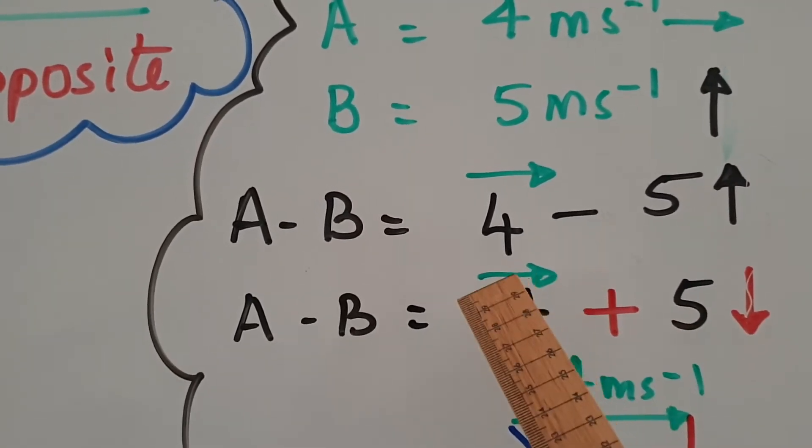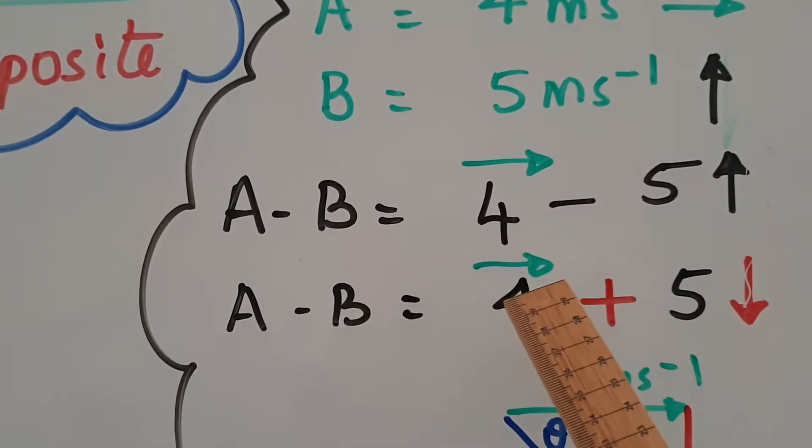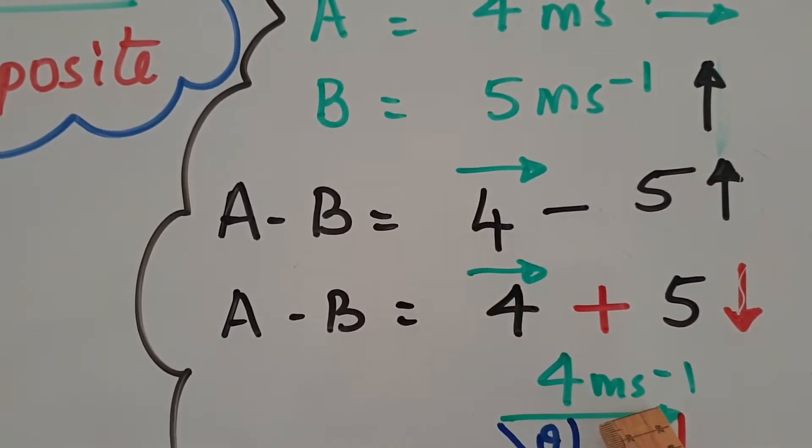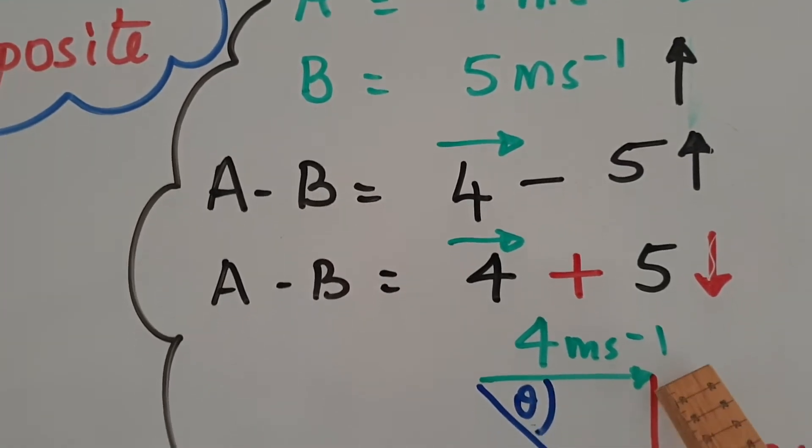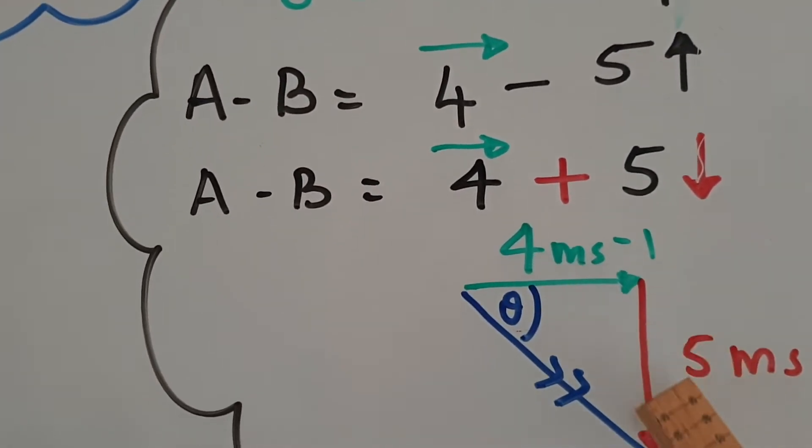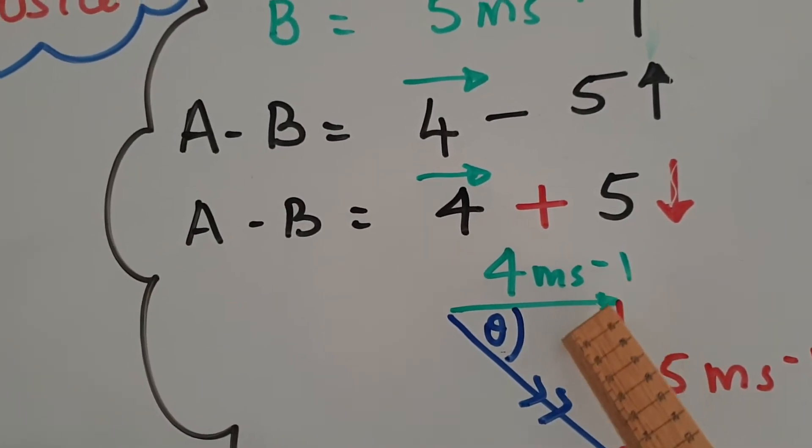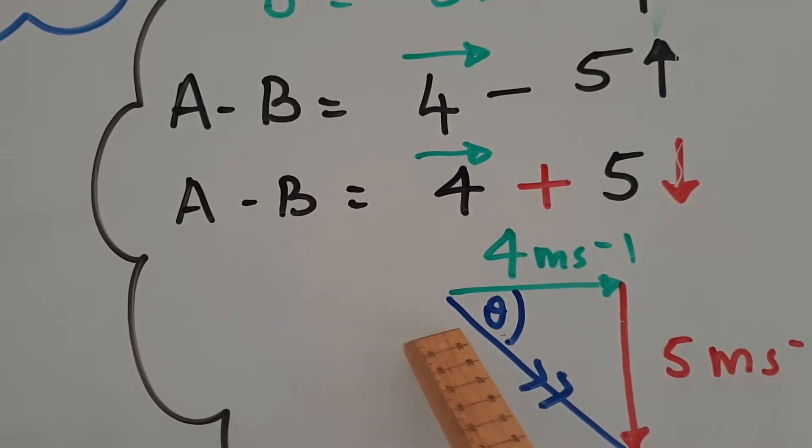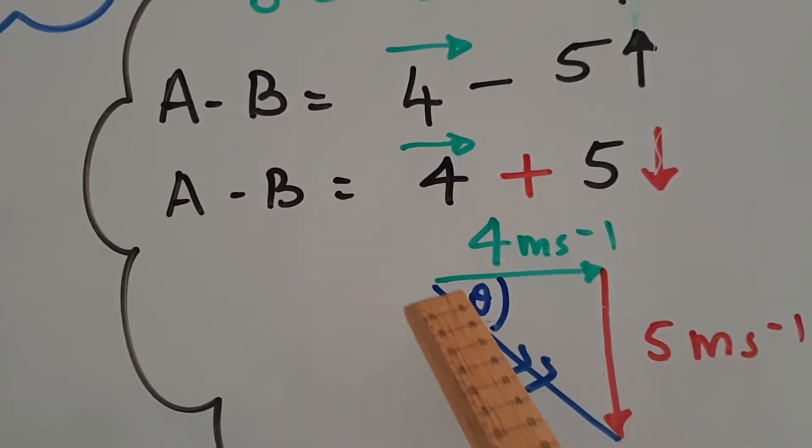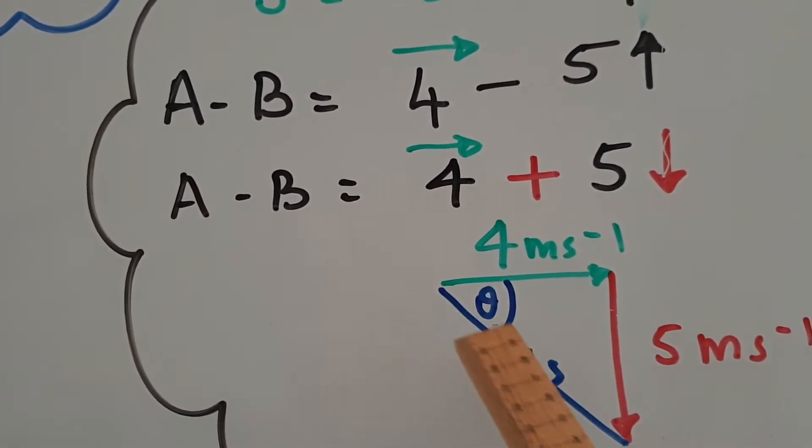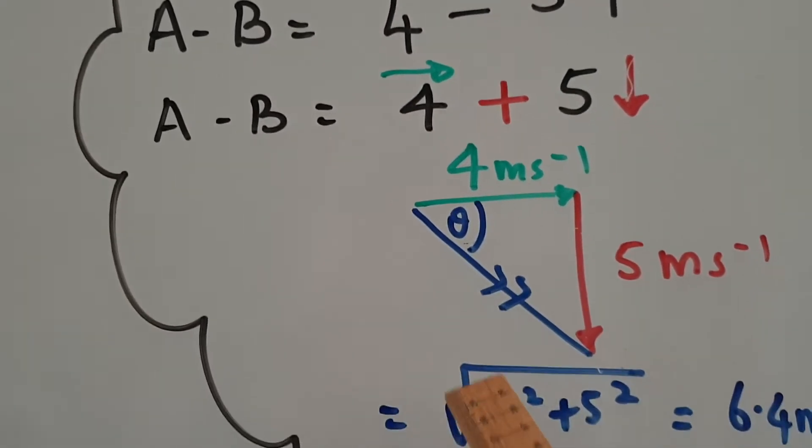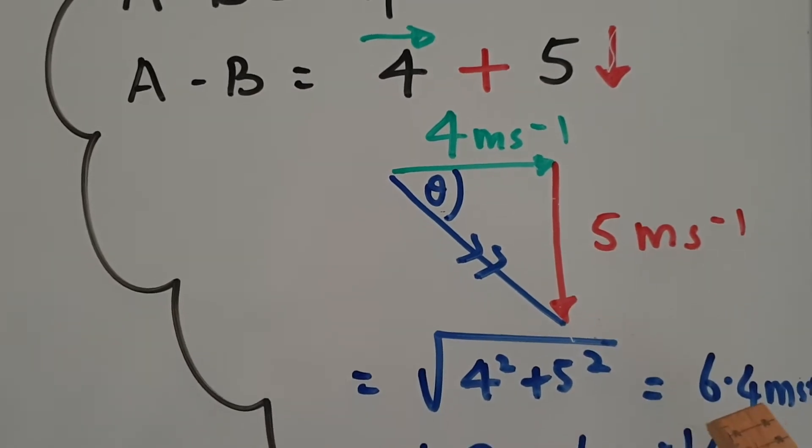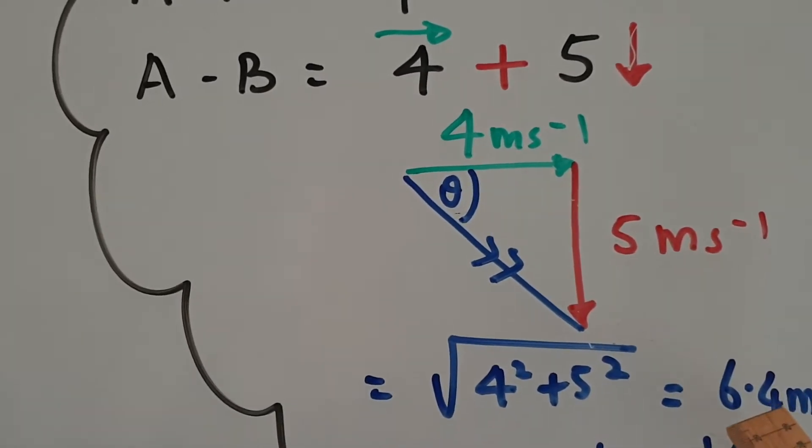So vector addition, because they're not in the same straight line, we have to get a vector triangle. So you first draw the green arrow and then you add the red head to tail, so the tail of the red touches the head of the green. That becomes a right angle there and we complete that triangle. The resultant goes from start to finish. So your answer is this arrow with the double line. So how do you get that? It's using Pythagoras. It's 4 squared plus 5 squared and you get about 6.4 meters per second.